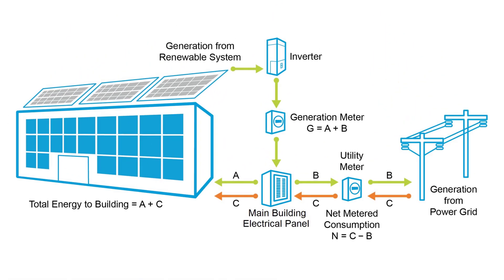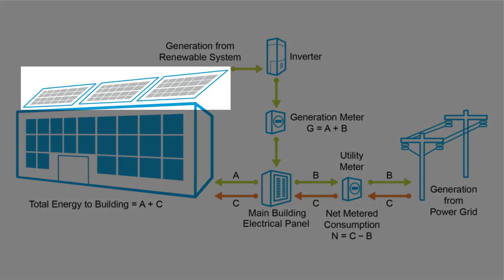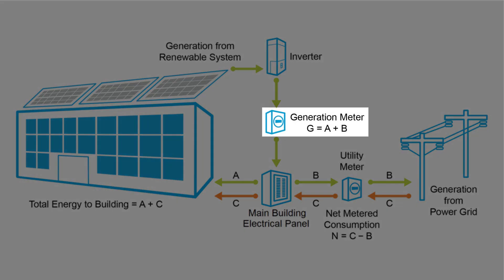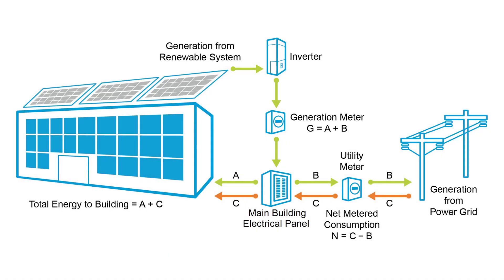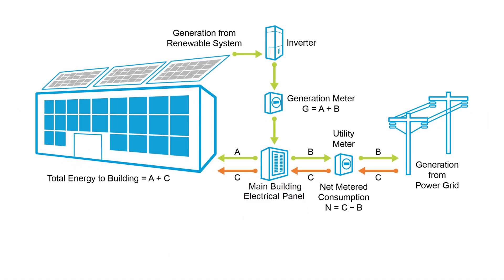In this diagram, we are assuming that electricity is being generated on-site via a solar photovoltaic system, but this could just as easily be an on-site wind turbine. The generation meter shown in this diagram captures the total quantity of energy produced by the system. It is expected that all on-site systems will be able to capture this total generation value and obtain values for specific date ranges in order to align with utility billing periods. For our purposes, we will refer to this as value G.